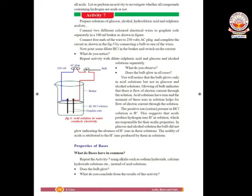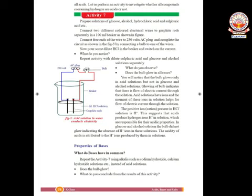Let us see another experiment — dilute hydrochloric acid solution in water conducts electricity. In this apparatus, take one beaker with dilute hydrochloric acid and place two graphite rods as electrodes, connected to an electric source of 230 volts. There is also a bulb in the apparatus. When current passes through this electrolyte — the dilute HCl solution — the graphite rods act as electrodes. Graphite is a non-metal but is a good conductor of electricity, so it is used as electrodes in electrolytic experiments.